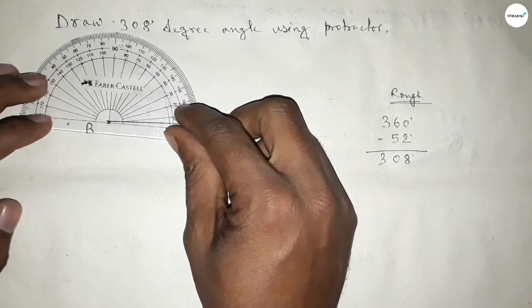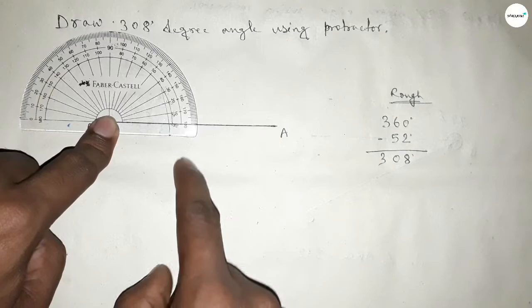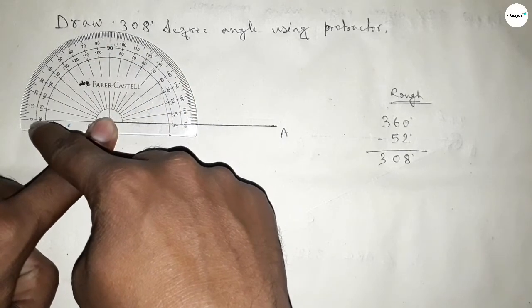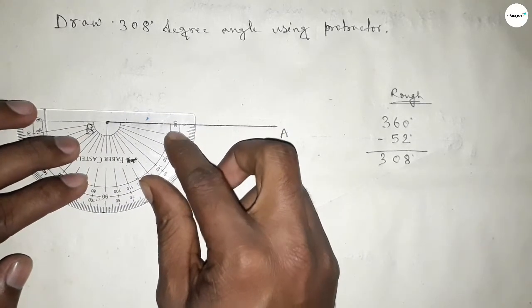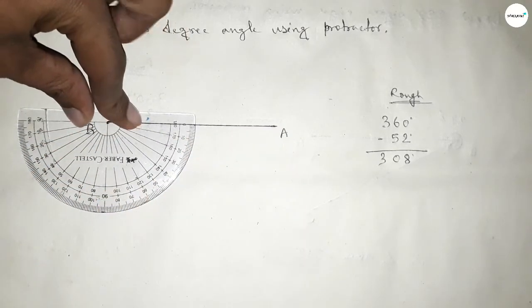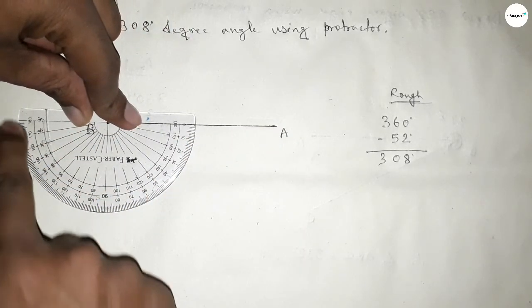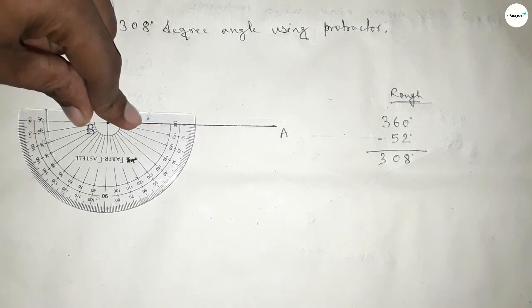First counting 360 degree angle. So putting the protractor on point B this way. From this, 180 degree angle, plus putting the protractor on point B this way, counting the angle. So total 360 degree angle.